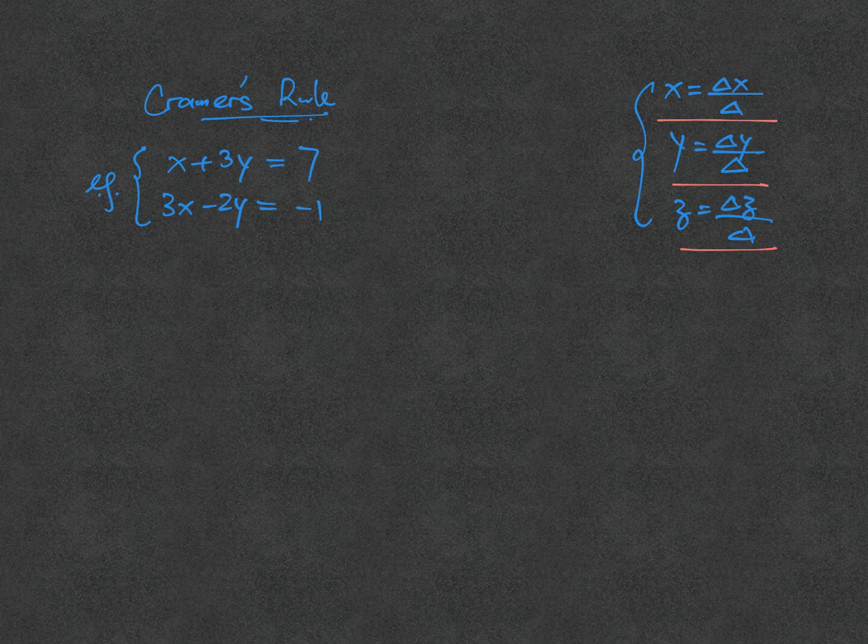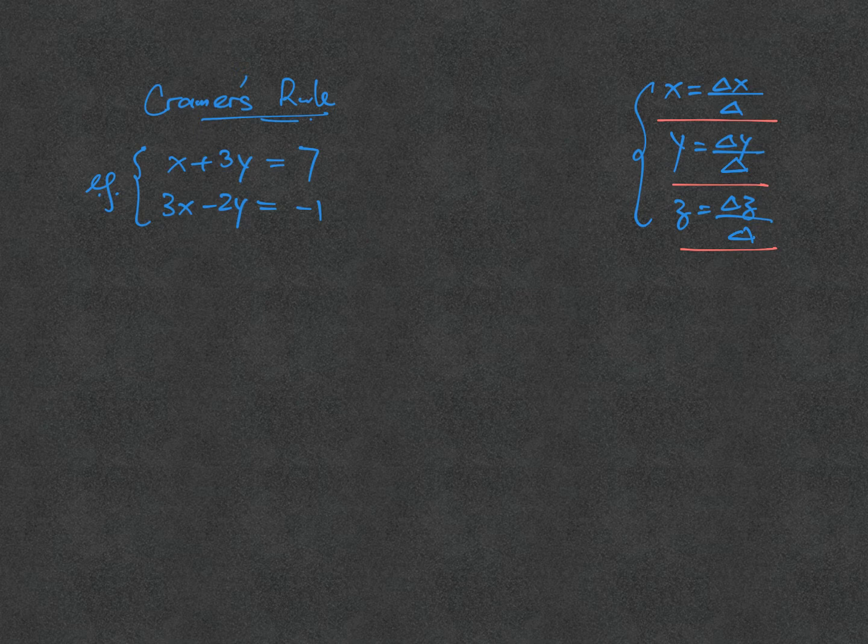Let's see what are delta x, y, z, and delta itself. Let's take the easiest one: two equations, two unknowns as an example.